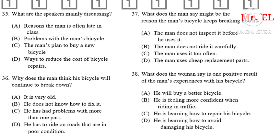Number 35: What are the speakers mainly discussing? Number 36: Why does the man think his bicycle will continue to break down? Number 37: What does the woman say might be the reason the man's bicycle keeps breaking down? Number 38: What does the woman say is one positive result of the man's experiences with his bicycle?